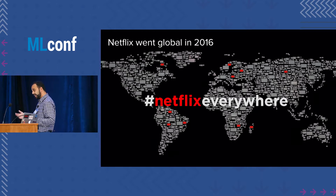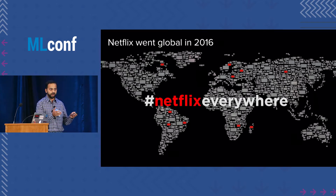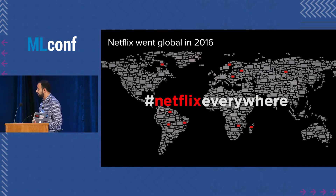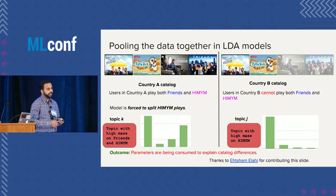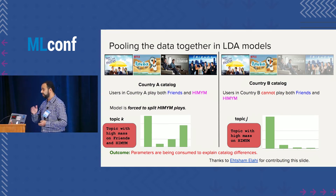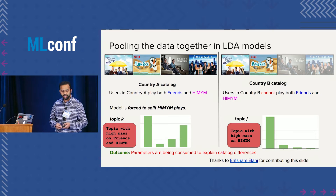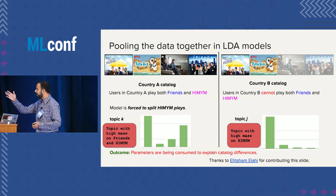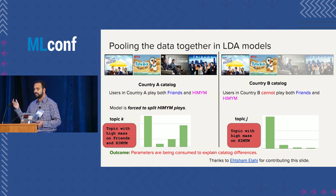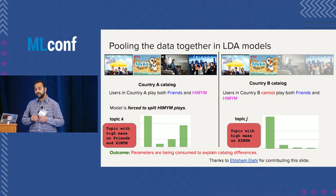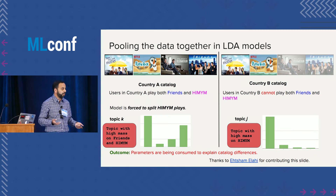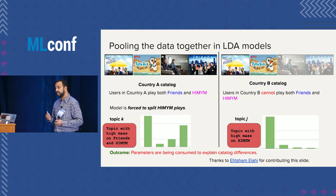We had that model and it worked great, but then Netflix went global. We wanted to make this model work globally so that no matter where the user is from, the model outputs relevant recommendations. The problem came when we pooled the data together and built one single topic model for members across the globe — we realized that the topics were basically just learning the catalog differences between countries. For example, if country B doesn't have Property Brothers and Friends, the topics were explaining those catalog differences, wasting model parameters on something we already knew a priori.